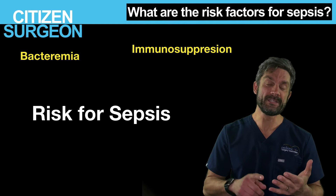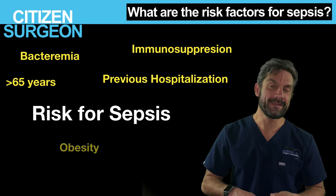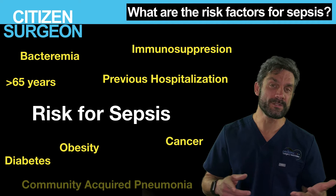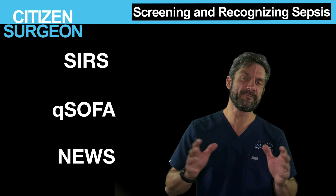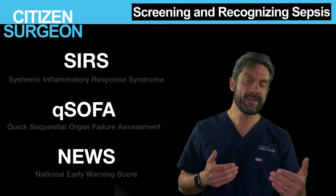There are many risk factors for sepsis: age, immunosuppression, a history of cancer, obesity, diabetes, previous hospitalization, bacteremia, and community-acquired pneumonia. And now we get to screening. There are a number of different screening calculators and methods — I'm going to give you an introduction to three: SIRS, qSOFA, and NEWS.